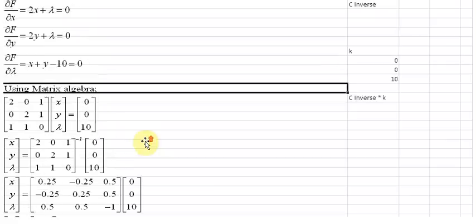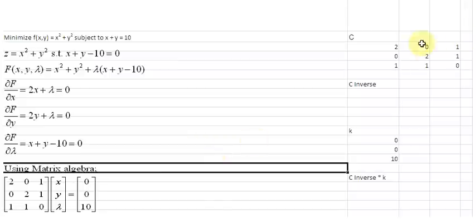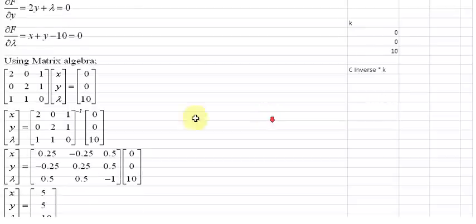For doing this we have first of all set up the coefficient matrix. This is the coefficient matrix which I have written here, matrix C. In this space here we want to find out C inverse because our solution is C inverse times this vector of 0, 0, and 10 which we call the k vector before.